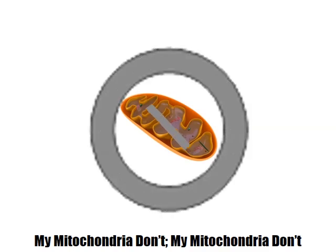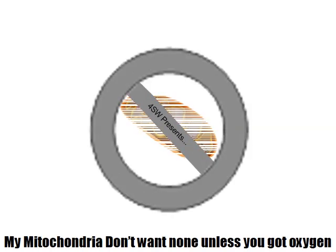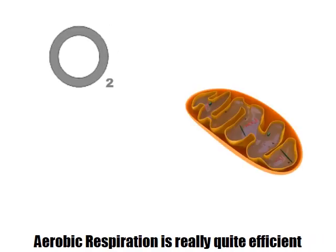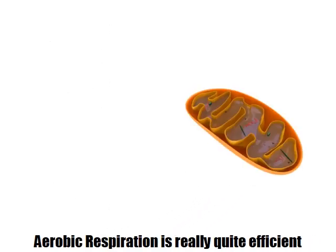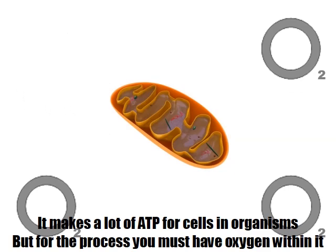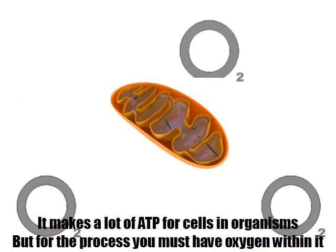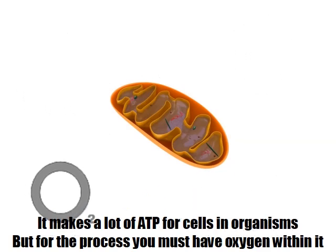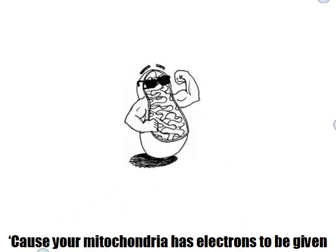My mitochondria don't want none unless you've got oxygen. Aerobic respiration is really quite efficient — it makes a lot of ATP for cells and organisms. But for the process, you must have oxygen within it, because your mitochondria has electrons to be given.